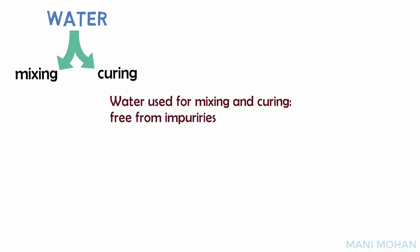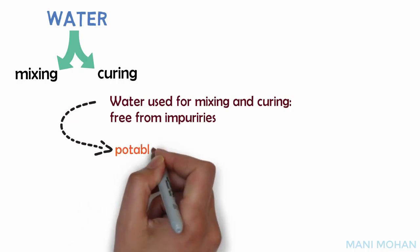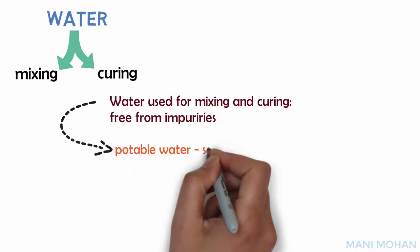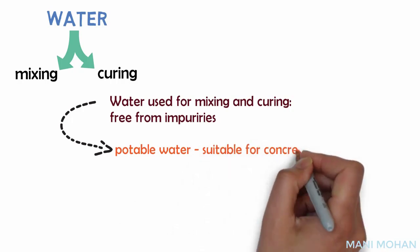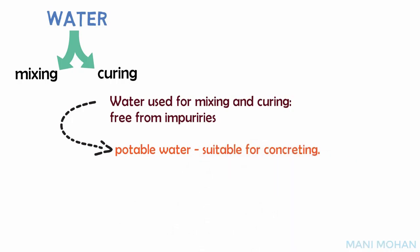acids, alkalis, salts, sugar, and organic materials. Water that is fit for human consumption, i.e., potable water, is generally considered to be suitable for concreting.